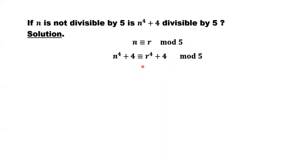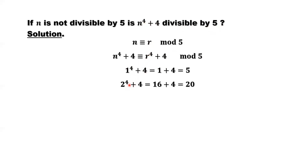Let's check one by one. When r equals 1: 1 to the power of 4 plus 4 equals 5. Is 5 divisible by 5? Yes. So when r equals 1, it is true — N to the power of 4 plus 4 is divisible by 5. r equals 2: 2 to the power of 4 plus 4 equals 16 plus 4, which is 20. 20 is also divisible by 5. We also confirm this situation is true.